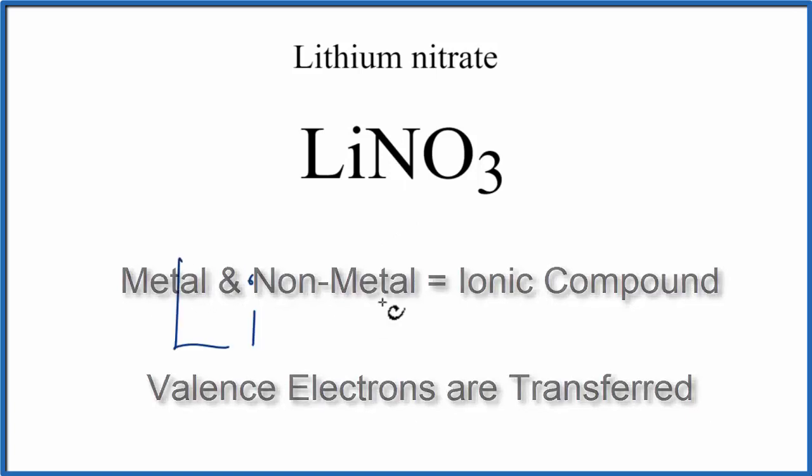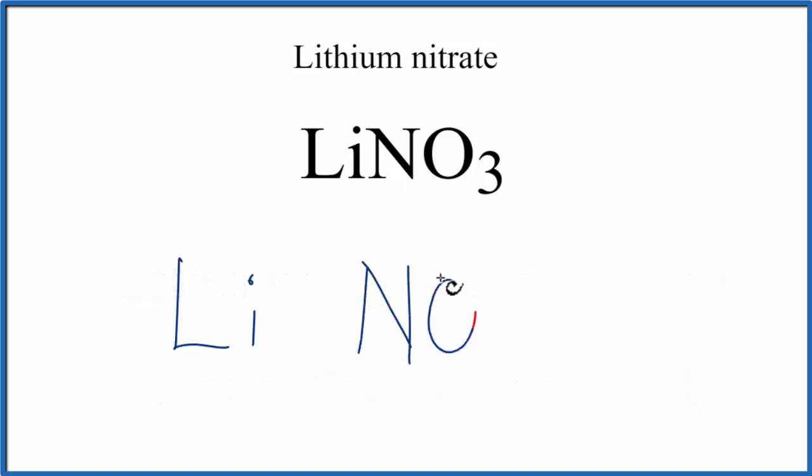So we'll write Li, and then we'll write our NO3. Lithium's in group 1 on the periodic table, it has one valence electron, and it's going to transfer that to the NO3 here.